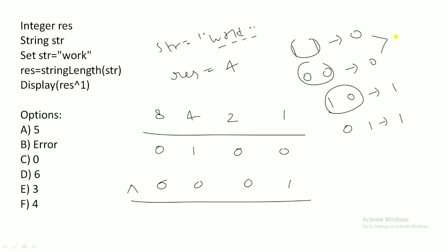Performing the XOR operation: XOR gives 1 when both bits are distinct, and 0 when both bits are the same. So: 0 XOR 0 = 0, 1 XOR 0 = 1, 0 XOR 0 = 0, 0 XOR 1 = 1 — giving binary 0101, which equals 5. So the answer is 5.